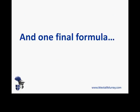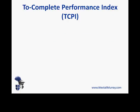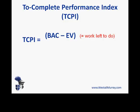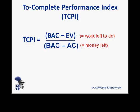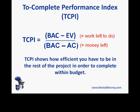One final formula we need to know is the to complete performance index. The TCPI takes budget at complete minus earned value — the work we've got left to do — and divides that by budget at complete minus actual costs — the money we've got left. What this shows you is how efficient you have to be for the rest of the project in order to complete within budget.